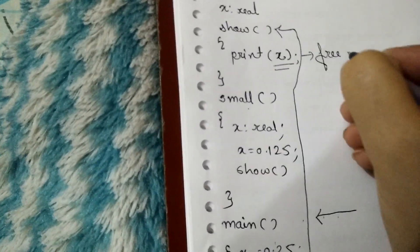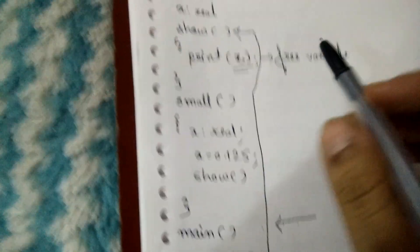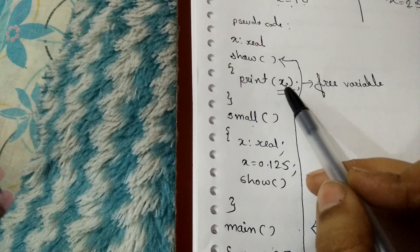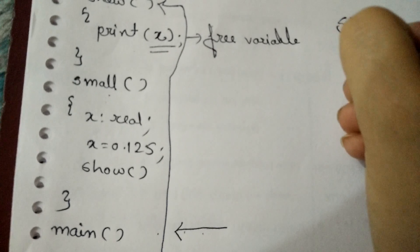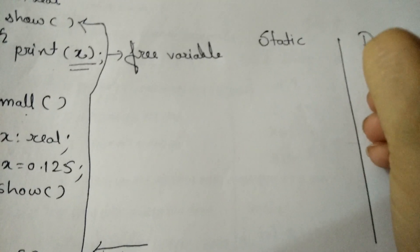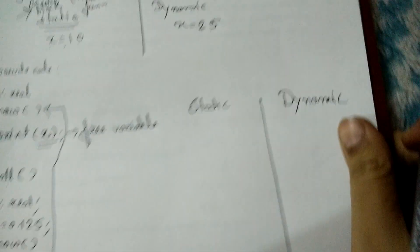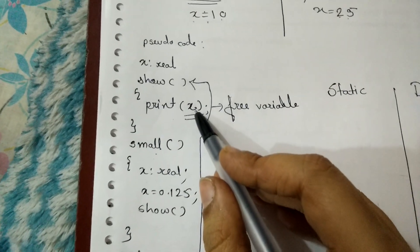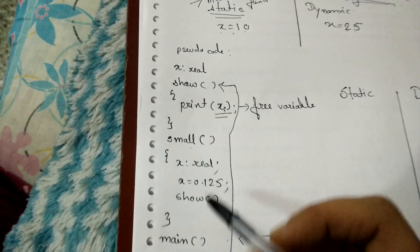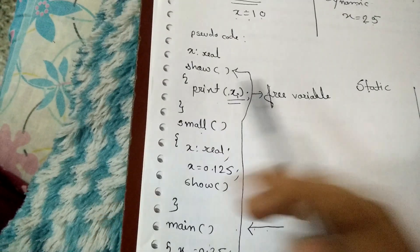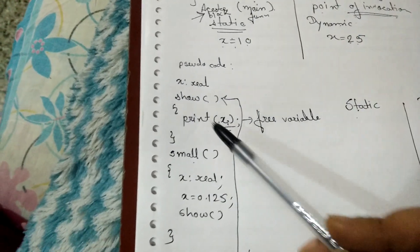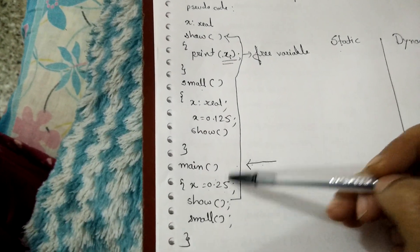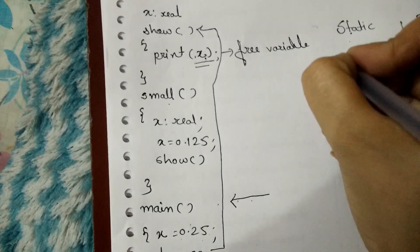Here X is our free variable, and we have to decide the value of X under both conditions: static scoping and dynamic scoping. In static scoping, since show is a function and X is a free variable, we follow the ancestor block which is the main function. So whatever the value of X is in the main function will be printed — that is 0.25.